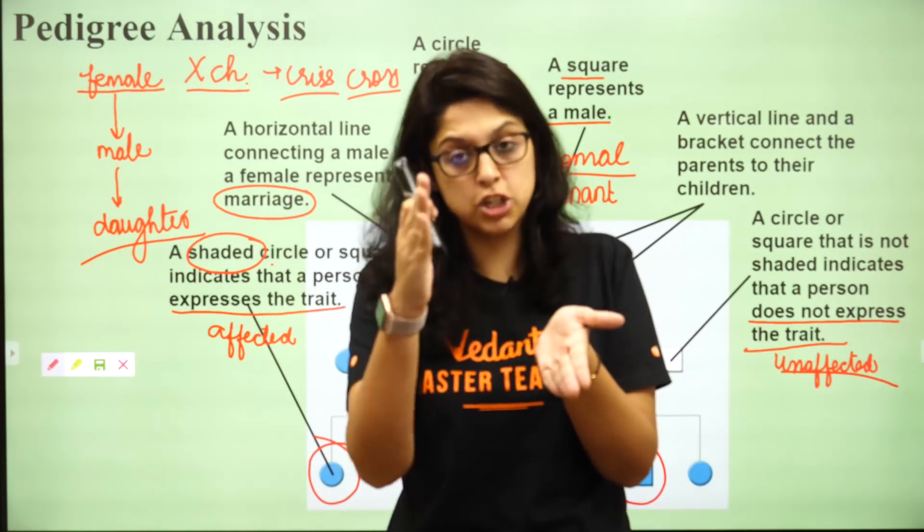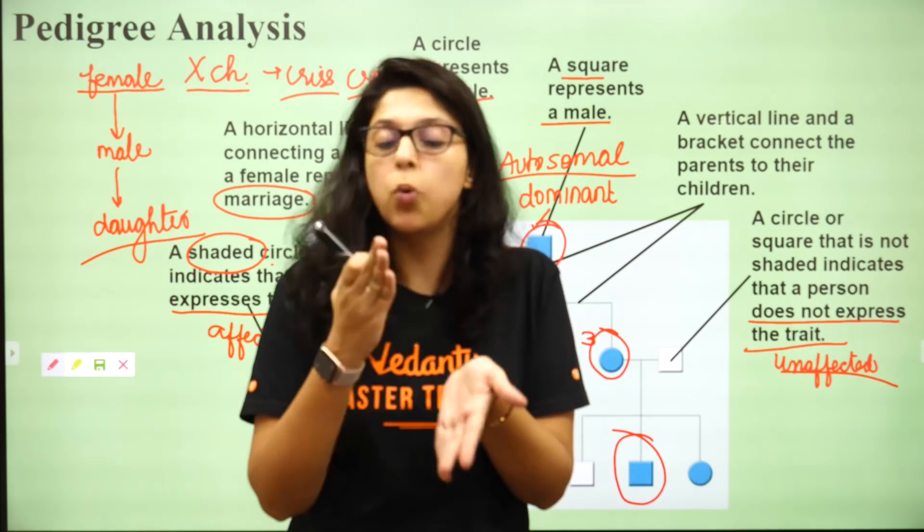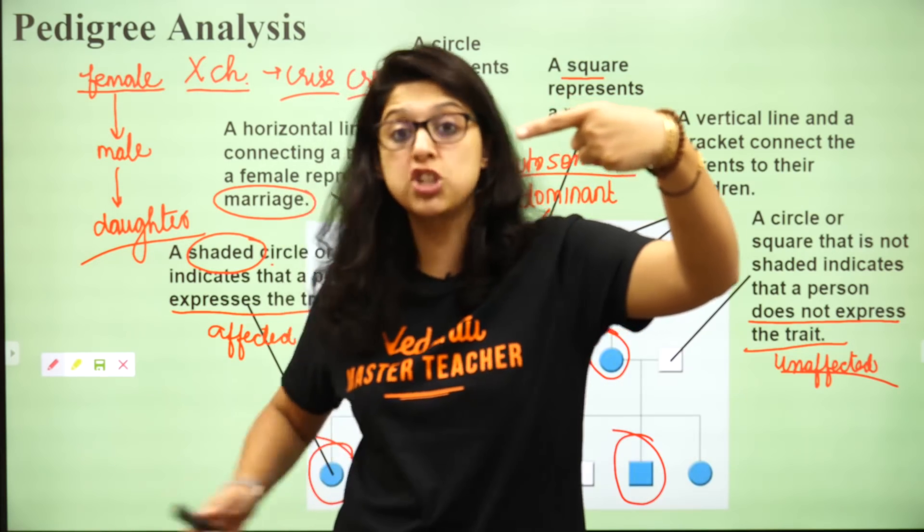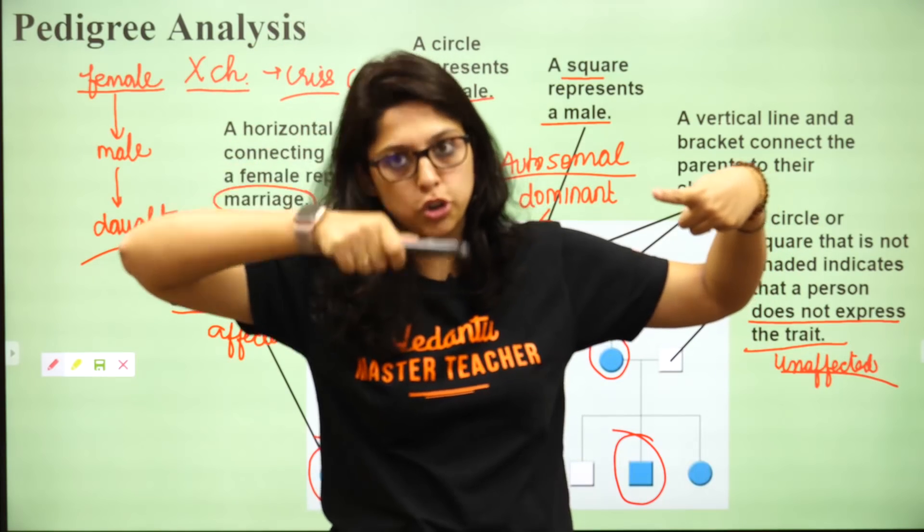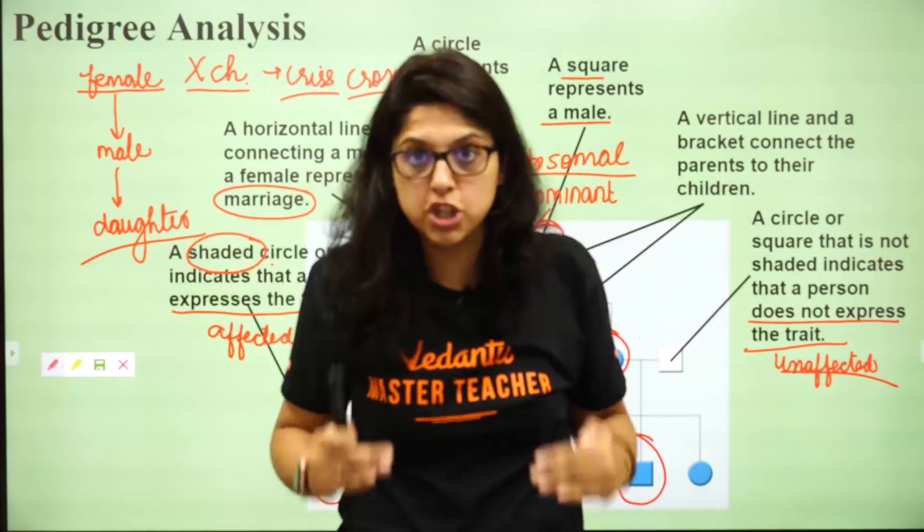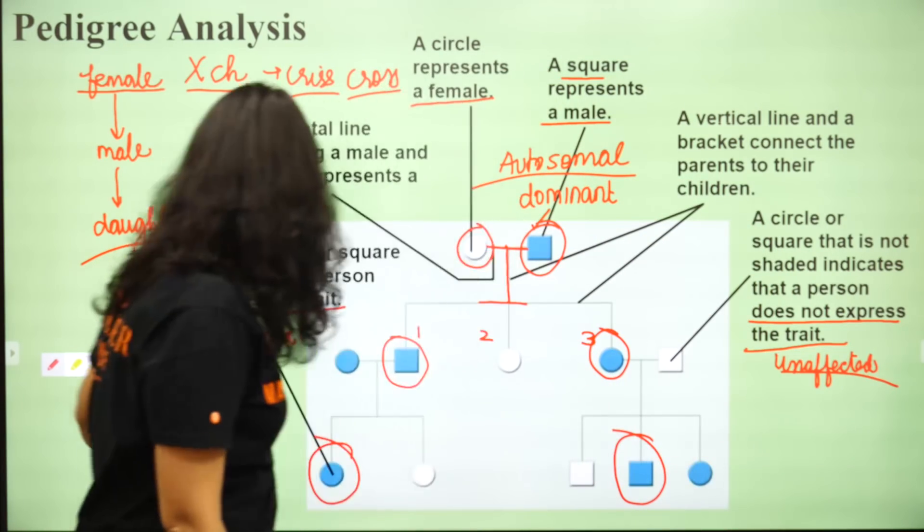So in today's pedigree analysis, in today's biobomb pedigree analysis we did about the symbols, what do the symbols denote, what are the three types of diseases which are there. X-linked jahan pe criss cross nazar aayega, it will always go from father to daughter, daughter to son. Dominant autosomal dominant in which all generations will be affected, and autosomal recessive where we are going to skip a generation.